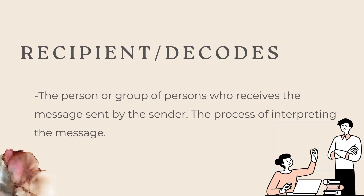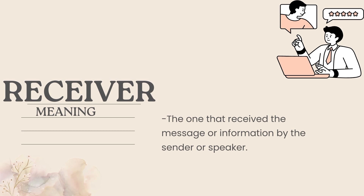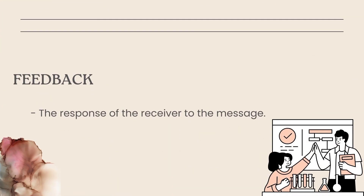The next is recipient or decoder — the person or group of persons who receives the message sent by the sender, through the process of interpreting the message. The next one is the receiver: the one that receives the message or information from the sender or speaker. The next is feedback: the response of the receiver to the message of the sender.